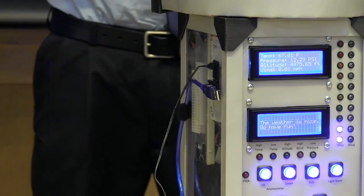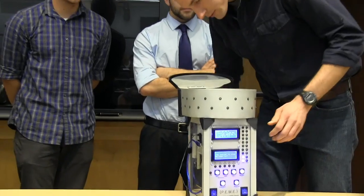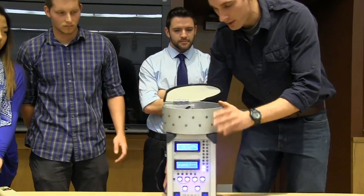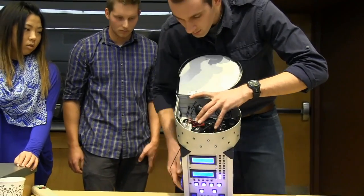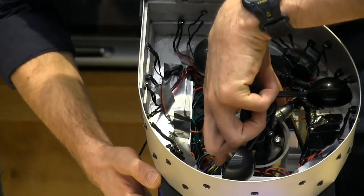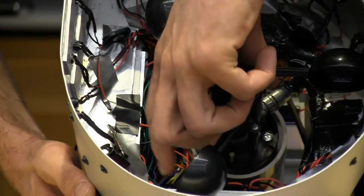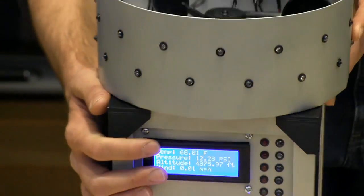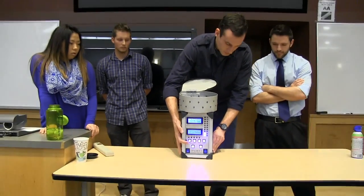We also are measuring barometric pressure with a pressure sensor. It's a little hard to see. I'll see if you can zoom in and I'll point to it. It is right here. And it uses a piezo-resistant crystal to measure the barometric pressure. And then it can also measure altitude as a function of pressure.